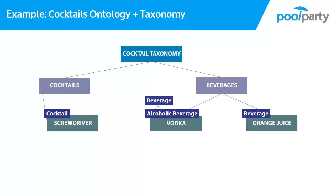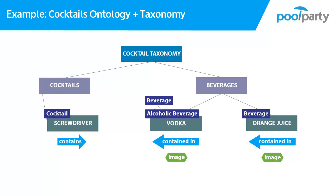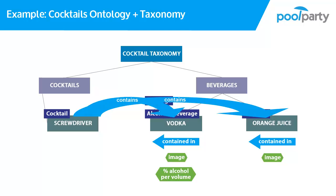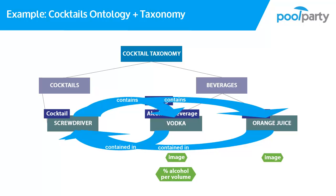Once we have classified our concepts, we can use the custom relations and attributes of our ontology. For our cocktail, we can use the custom relation contains. Our beverages have the custom relation contained in and the attribute image available. Our alcoholic beverage will also have the custom attribute percent alcohol per volume available. Vodka now has both the attributes and relations of beverages and alcoholic beverages, because it is a member of both classes. We can say that the screwdriver contains both orange juice and vodka, and add the inverse relation stating that orange juice is contained in the screwdriver and that vodka is contained in the screwdriver as well. We can add a URI pointing to a picture of orange juice, and specify that vodka contains 40% alcohol per volume.